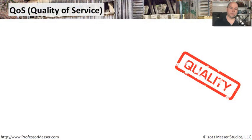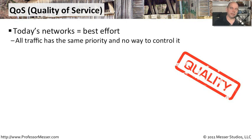There are many different definitions for quality of service, but when we're talking about networks, we're talking about the way that we would manage or control different types of traffic going through the network. On most Ethernet networks, you simply provide the packets onto the network, and your networking devices make something called a best effort to get that packet to the other side. No packet has a particular priority over another — they're simply flowing through the network in whatever order our networking devices allow. There's no way to control or prioritize the traffic.